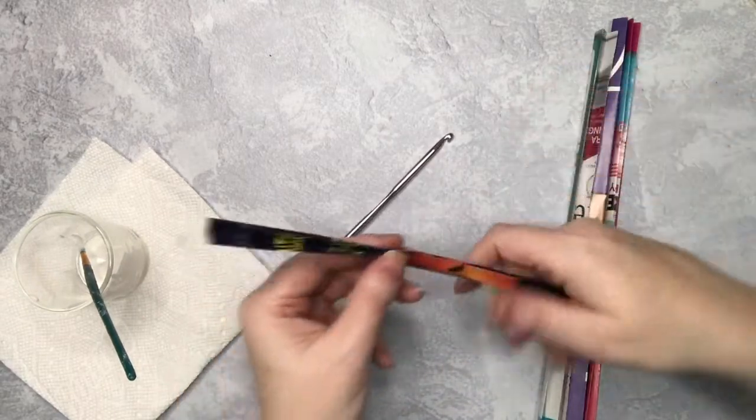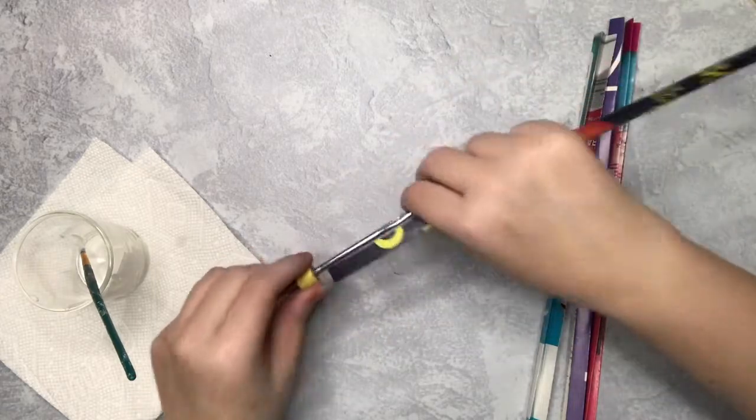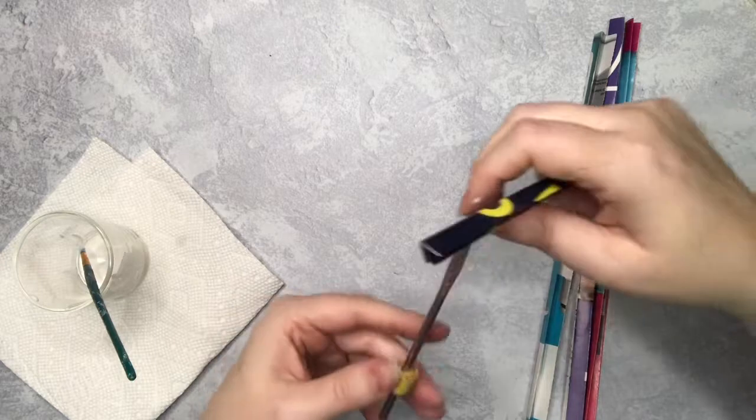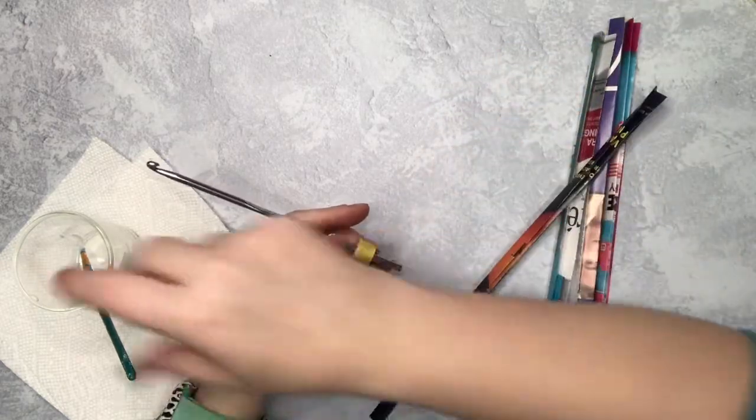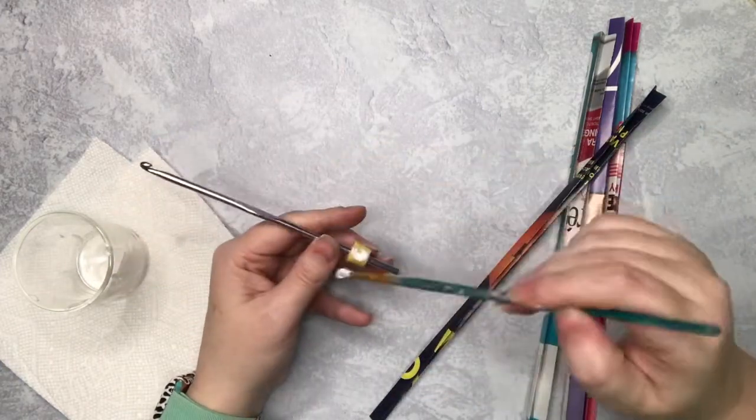So to add your next strip, be sure that your folded side of the paper is facing the same direction as your first strip. Again, it just keeps everything nice and even. It wouldn't be the end of the world if you got one backwards. Now you're just going to overlap the first strip slightly and glue it down really well.